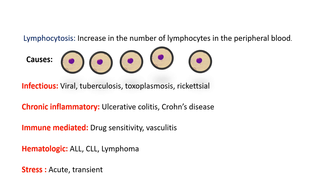Lymphocytosis is an increase in lymphocytes in peripheral blood above 3000 cells per cubic millimeter, though this differs by lab. Infectious causes include viral infections, tuberculosis, toxoplasmosis, and rickettsial infections. Chronic inflammatory causes include ulcerative colitis and Crohn's disease. Immune-mediated causes include drug sensitivity and vasculitis. Hematologic causes include ALL, CLL, and lymphoma, and stress can cause acute transient lymphocytosis.